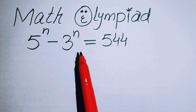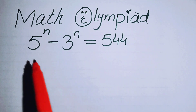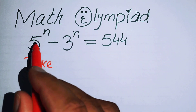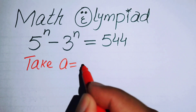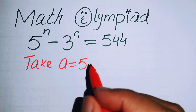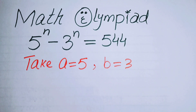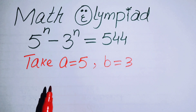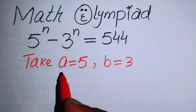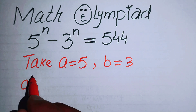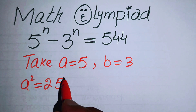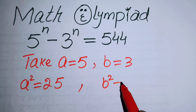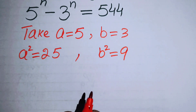The very first thing we are going to do is substitute variables. Let a = 5 and b = 3. Then we take the square of both terms: a squared equals 25, and b squared equals 9.